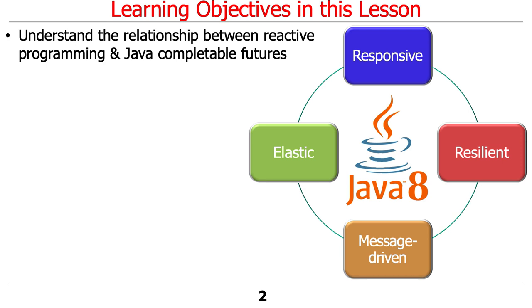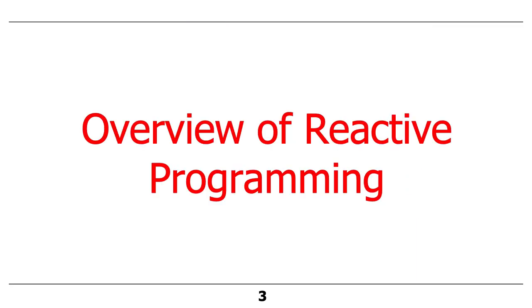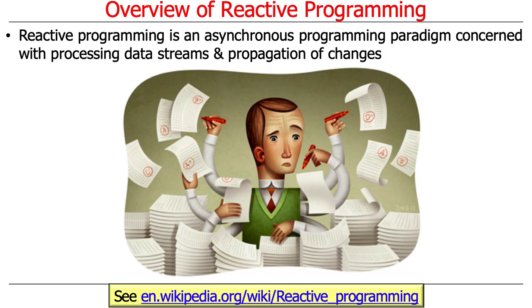To start off the discussion, we're going to focus first on the relationship between so-called reactive programming and Java completable futures. You'll see that they have some things in common — they're not entirely identical. There's some additional stuff in Java that goes further to provide reactive programming support, but completable futures are a good down payment in the direction of reactive programming.